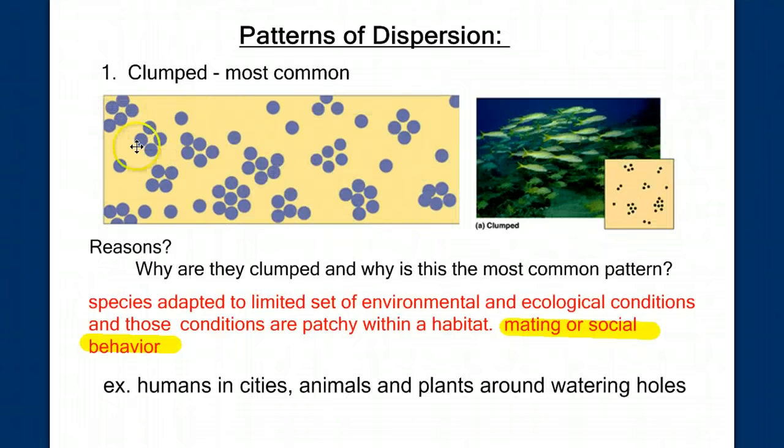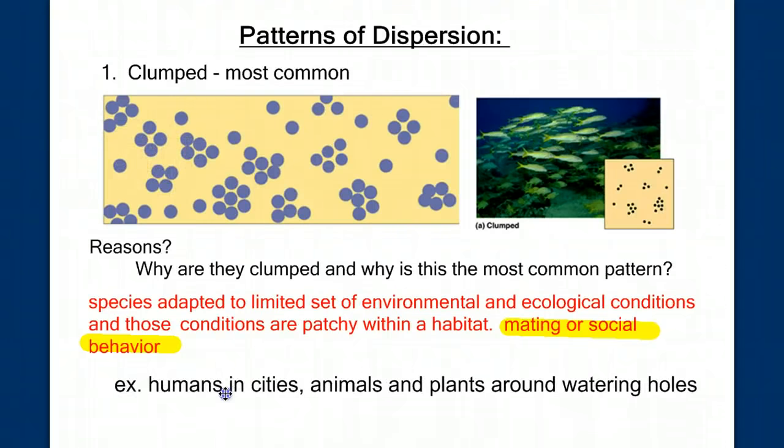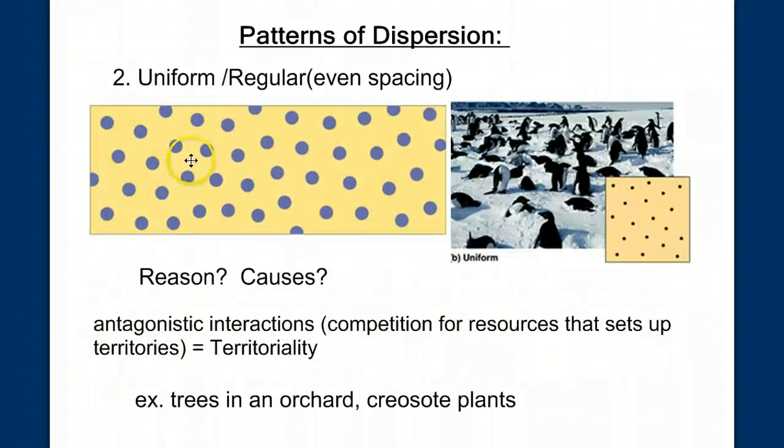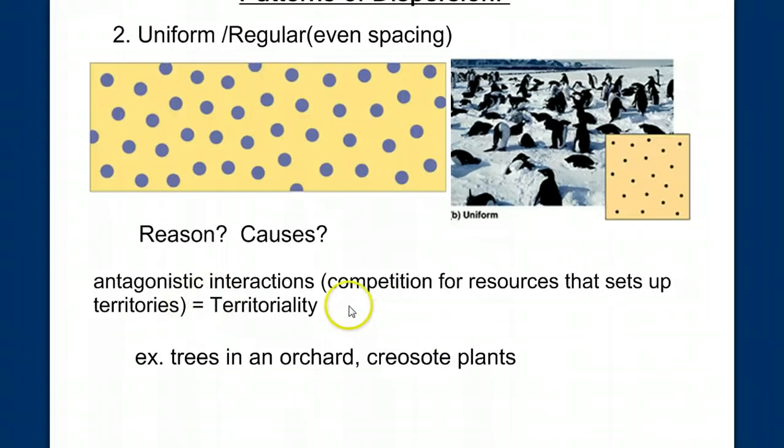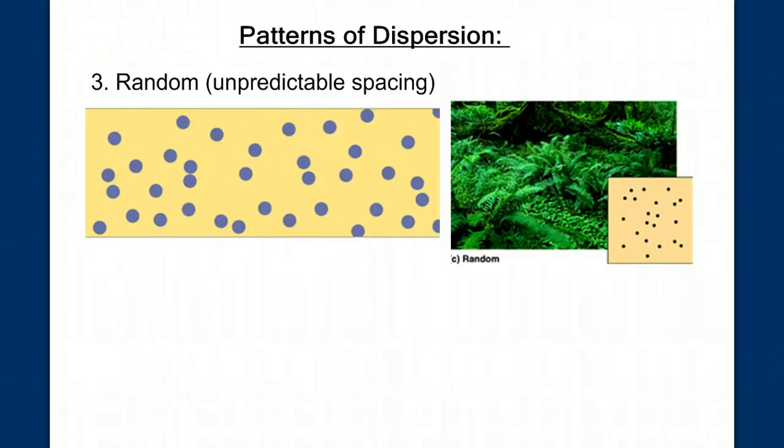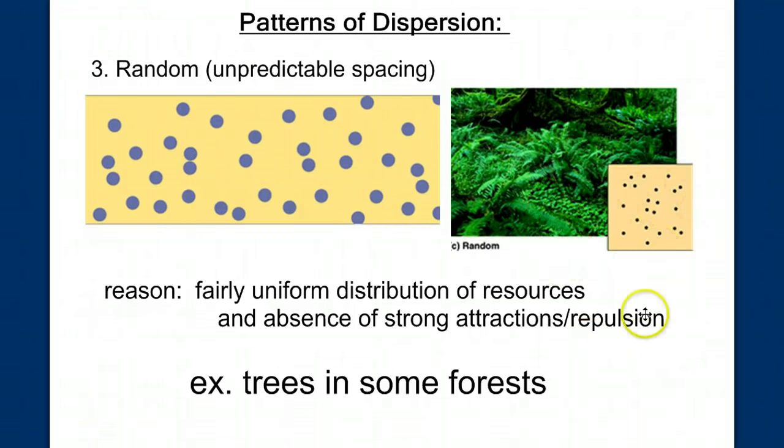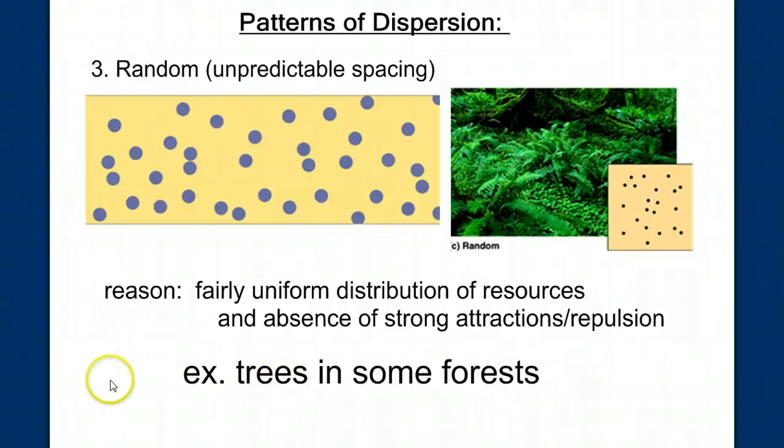If clumped is the most common, and organisms tend to clump around resources like humans would in a city, or animals and plants around a watering hole, and uniform and regular is due to large amounts of competition creating situations of territoriality, why would we get a situation where it's random? What conditions would be present or lacking? Well, we'd have a fairly uniform distribution of resources rather than an uneven distribution, and it's the absence of strong attractions or repulsions would lead to this random spacing. An example would be trees in certain forests, or these plants here in this picture, that have access to the resources but have no reason to either attract or repel each other.